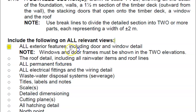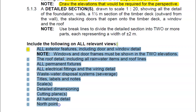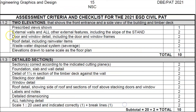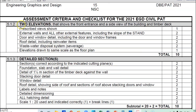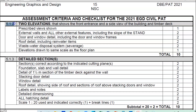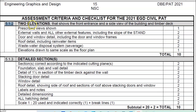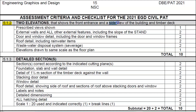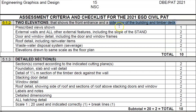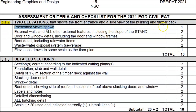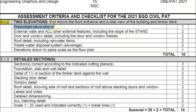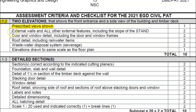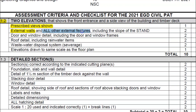Looking at the actual checklist, make sure first of all that those two elevations are numbered 5.1.2. You're going to have two elevations: one showing the front entrance and the other showing the side view including the timber decks. Those are the two prescribed views — one out of ten if you get that right. The external walls must be shown along with all other external features.